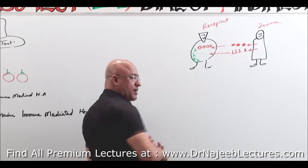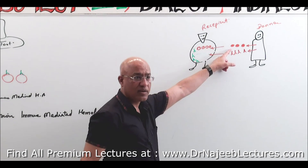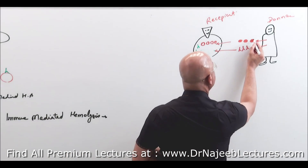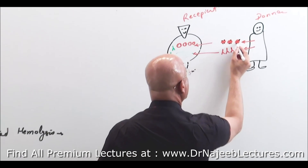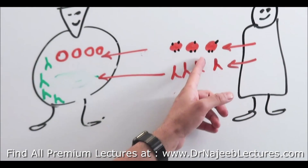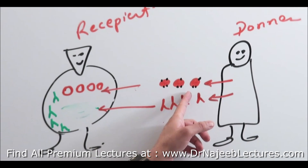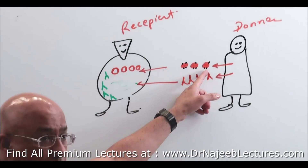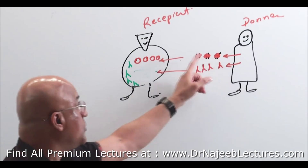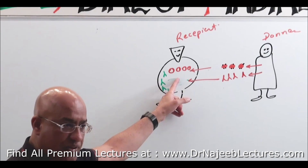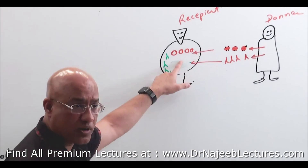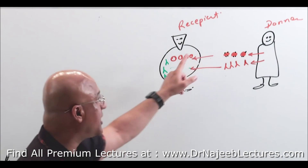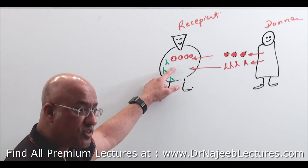Whenever these components are entering the recipient, the recipient's immune system may attack the donor red blood cells. Why? If by chance there was some specific antigen present on the donor's RBCs — let's suppose it is not from ABO, not from RH, but from some other minor system of blood grouping — if the donor RBCs had some antigens which were not present on the recipient's RBCs, then those antigens will be considered foreign by the recipient immune system.